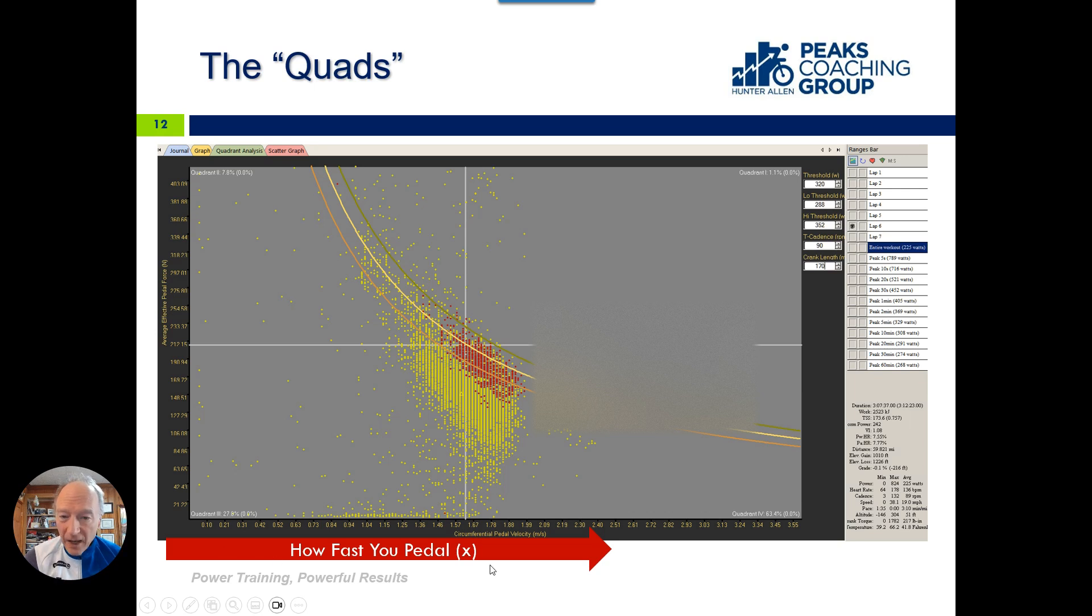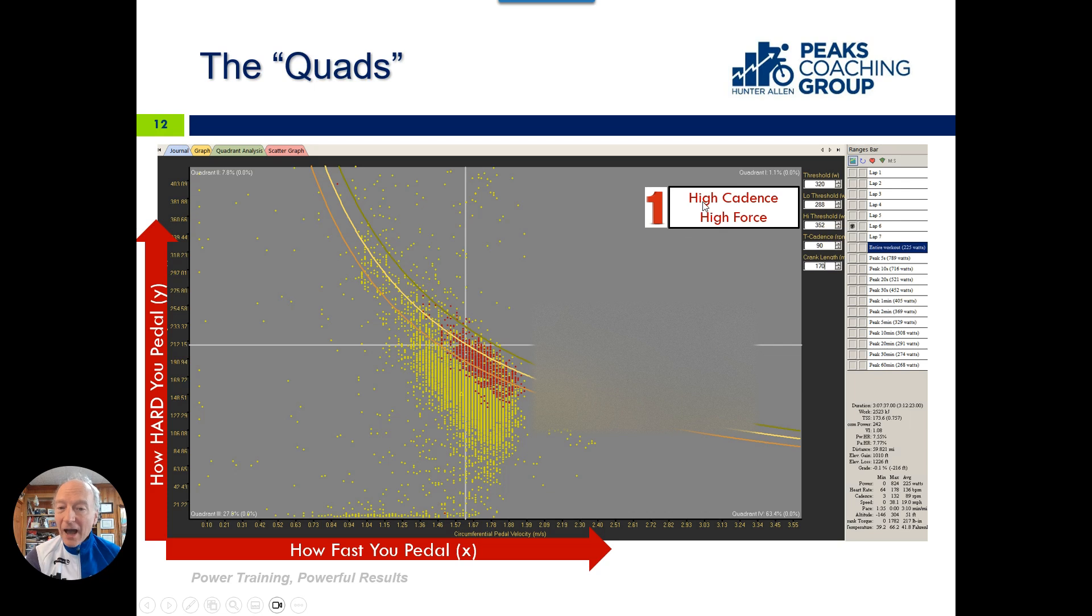This is how fast you pedal, and this is how hard you pedal. Quadrant one up here is high cadence and high force. So you're pedaling really, really hard, and you're pedaling really fast, over 90 RPM. This is sprinting. When you see somebody in this quadrant, these points are going to be sprinting—out of the saddle, going super hard and fast.